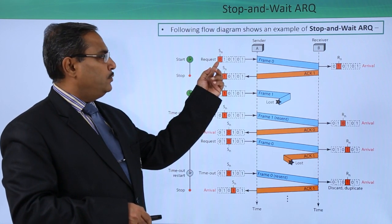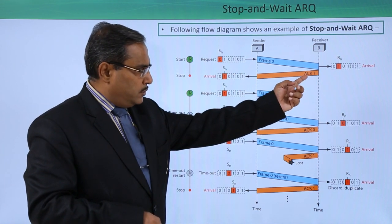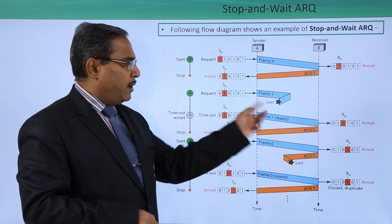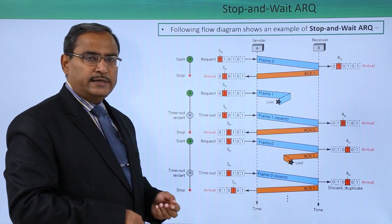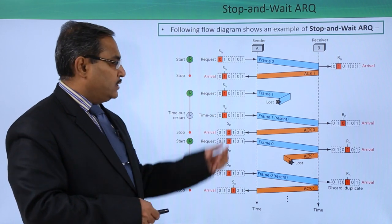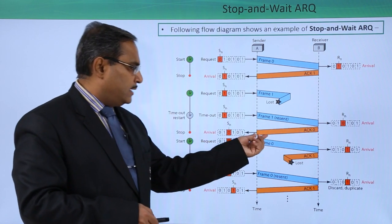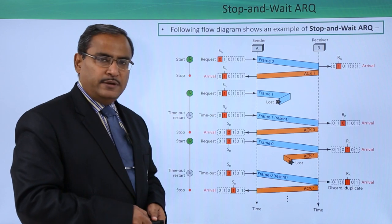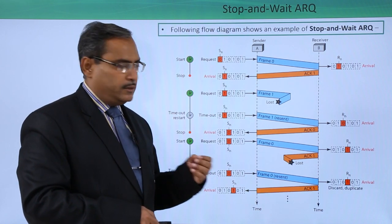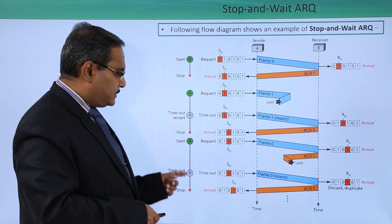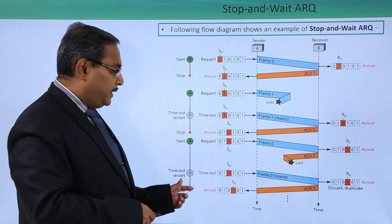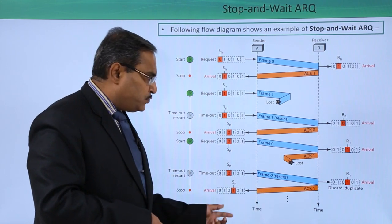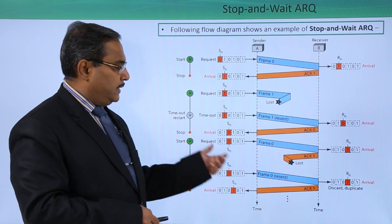The diagram explains: first, sn=0, so frame 0 is sent. Acknowledgement 1 comes back, asking for frame 1 to be sent. Frame 1 is sent but is lost, so no acknowledgement comes from the receiver, and frame 1 is resent. Then acknowledgement 0 comes, meaning frame 0 should be sent. This acknowledgement is sent but is lost or corrupted in the network, so the timer runs out, the timer restarts, frame 0 is sent again, and acknowledgement 1 is received by the sender.